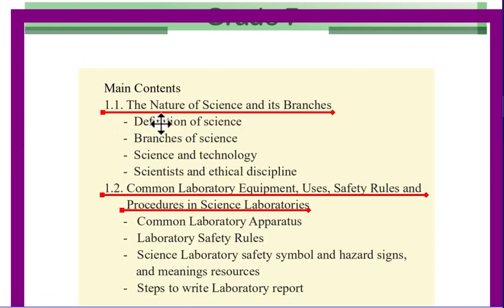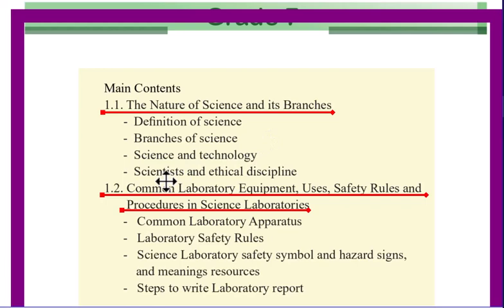Let's proceed and talk about the content of Unit 1. The nature of science and its branches. The topics include the definition of science, branches of science, science and technology, scientists and ethical discipline. We will also talk about common laboratory equipment, uses, safety rules and procedures in the science laboratory.